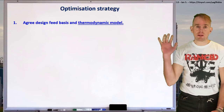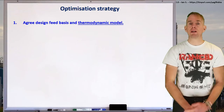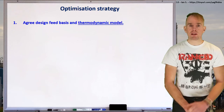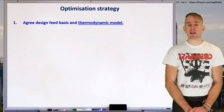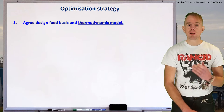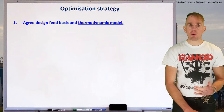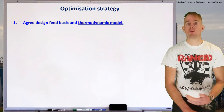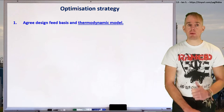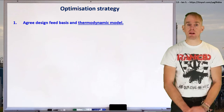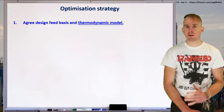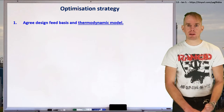Here on the whiteboard I'm going to draw up an outline for our optimization strategy. The first step in this strategy is to agree a design feed basis — that is to say, we know what the feed composition and flow rate is. We also know what our product specifications are going to be. Crucially, we also agree on a thermodynamic model and have validation data such that we're confident that this model is fit for purpose.